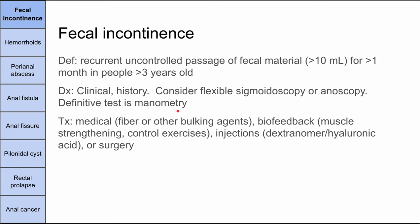Treatment for fecal incontinence can range across a wide variety of options. First, there are medical treatments — bulking agents and fiber to add bulk to stools and prevent leaking. You can do biofeedback, which involves muscle strengthening and control exercises such as Kegels. There are also injections to help tighten the anal sphincters and prevent incontinence. As a last resort, you could do surgery.